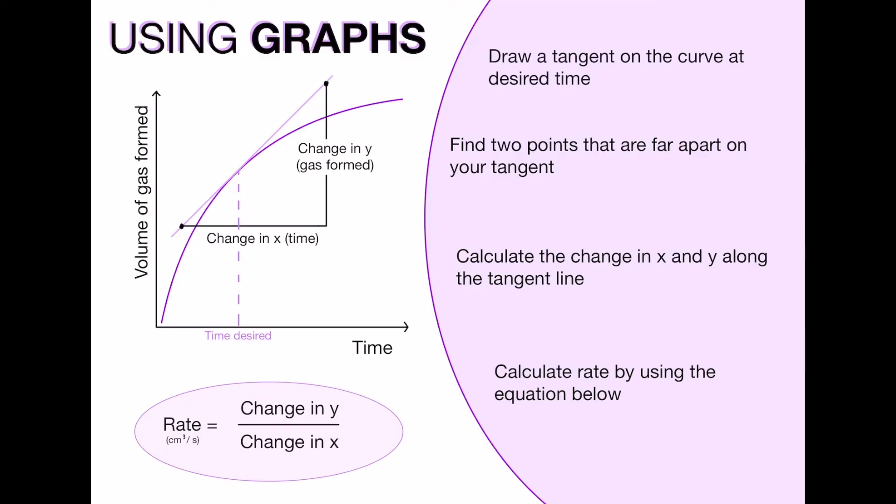After this you want to find out the change in the y and the change in the x values and then you simply put them into the equation at the bottom, so rate equals the change in y over change in x. Those of you that are on it with your maths equations, this is the same as just finding the gradient in a maths question. As you can see I've simplified and summarised those four points on the right hand side that will take you through the process that I just explained.